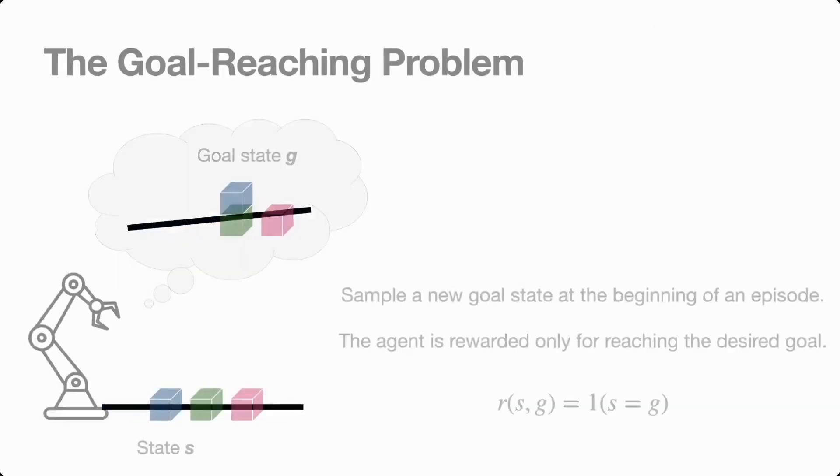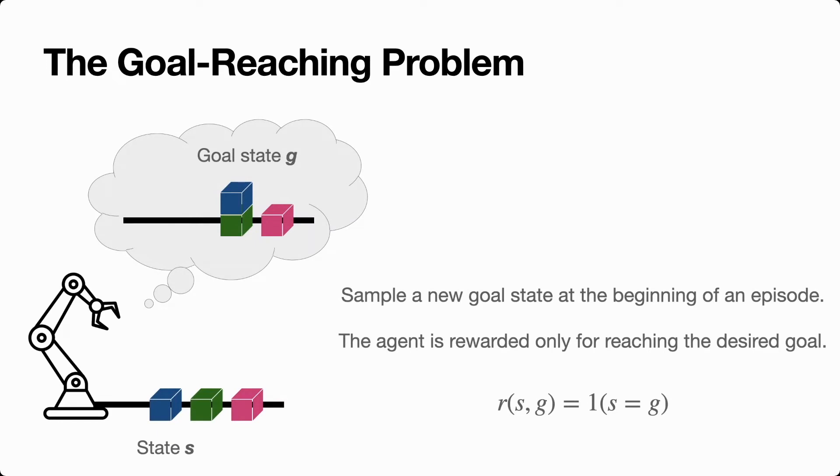Let's quickly review some basics. In the goal reaching setting, the agent is asked to not perform one specific task but rather one of many possible tasks. At the beginning of each episode, a new task is chosen for the agent randomly. Each task corresponds to reaching a particular goal state in the environment, and the agent is provided with an indicator reward as to whether or not this desired goal was actually reached.